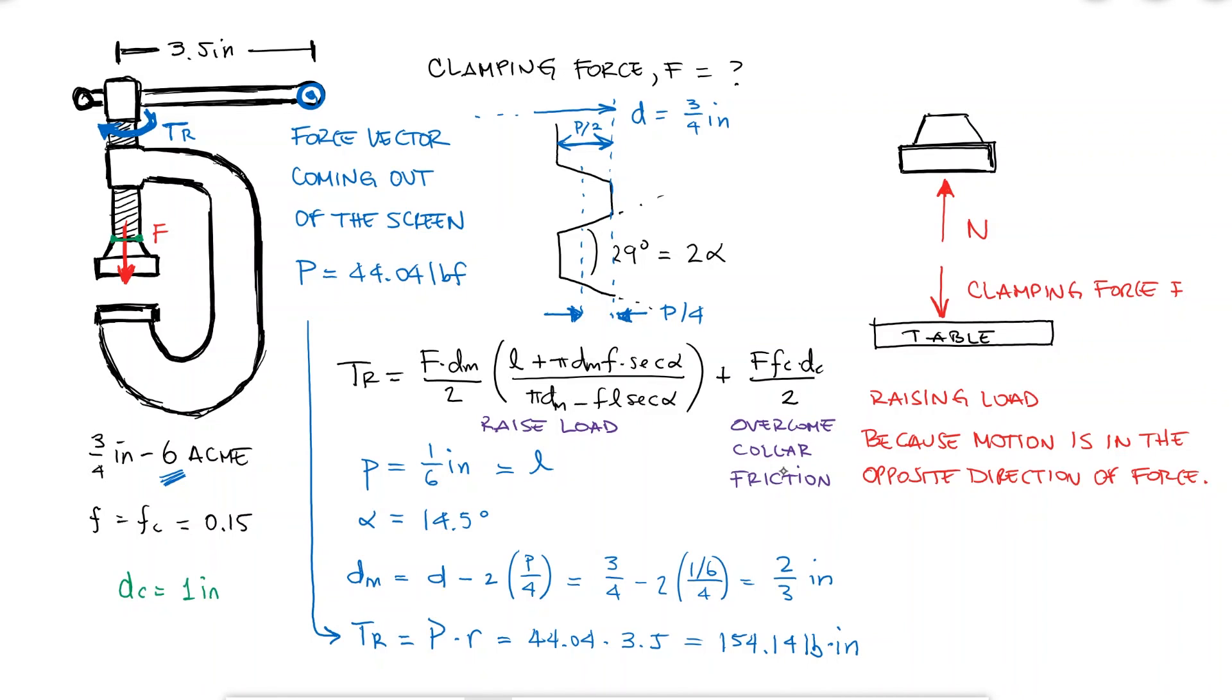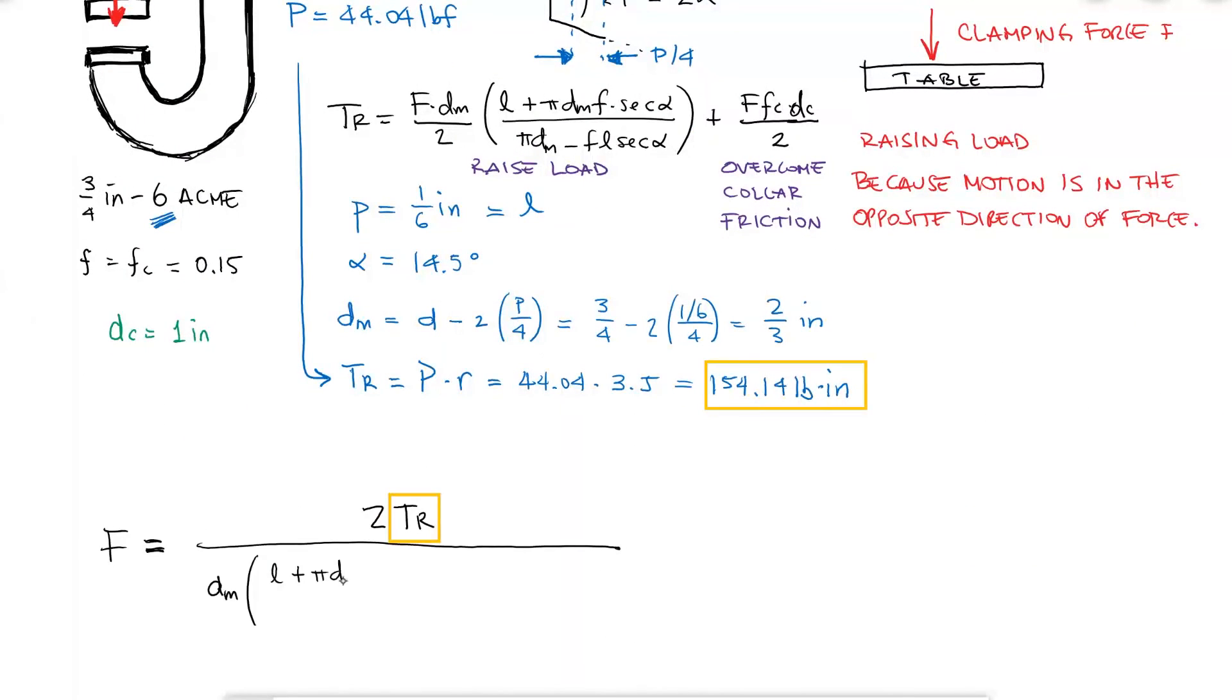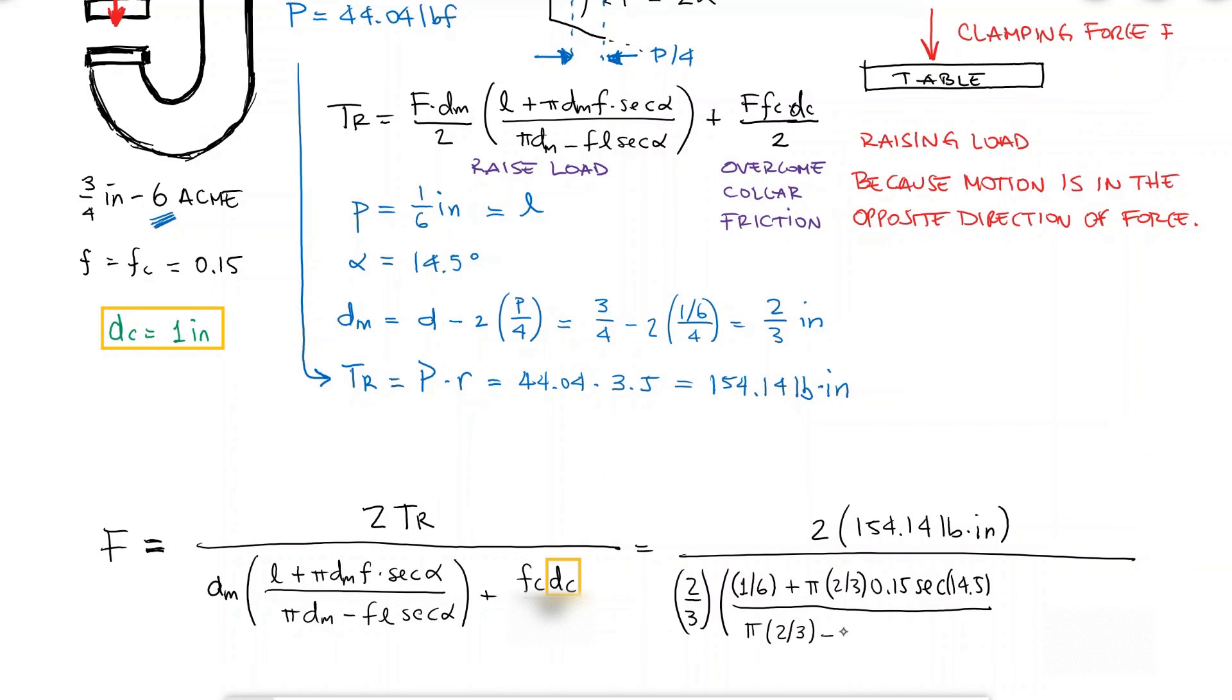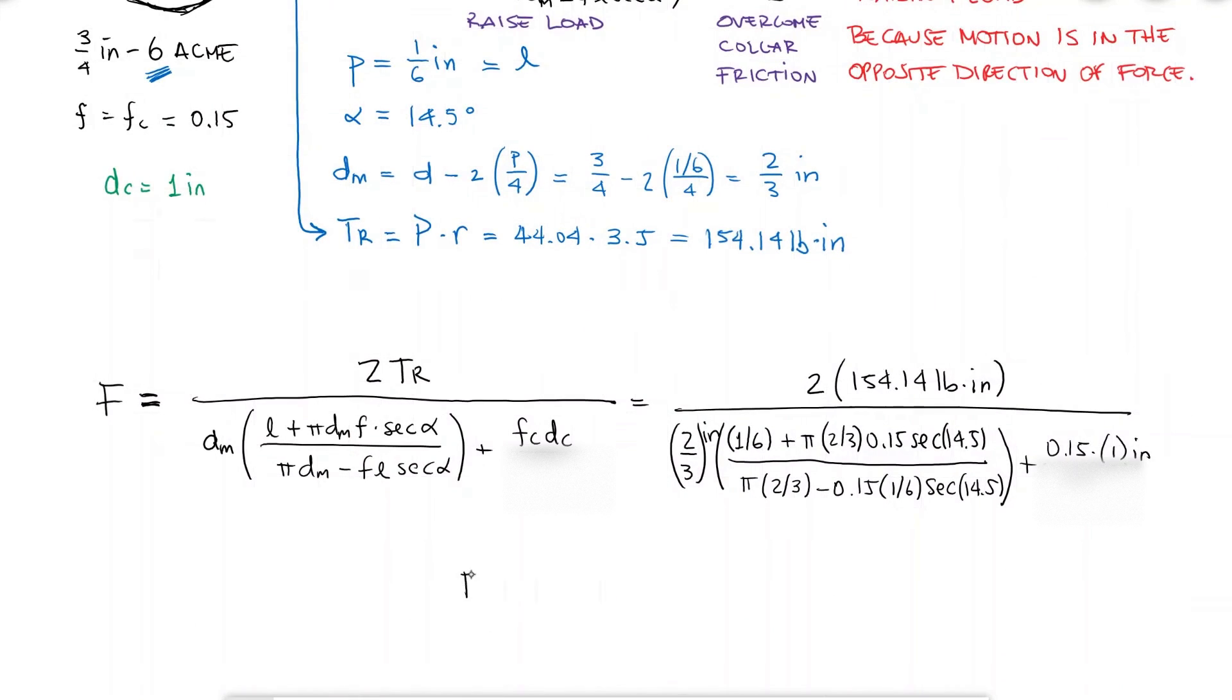Solving for F, which is the clamping force knowing all the values for the rest of the variables like the torque, the mean diameter, the lead, the angle alpha, the collar diameter, and the friction coefficients results in a clamping force of 1000 pounds.